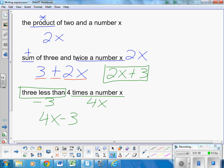This is 3 less than, right here, 3 less than 4 times a number. So I have to have, again, I'll write it again, 4x minus 3.